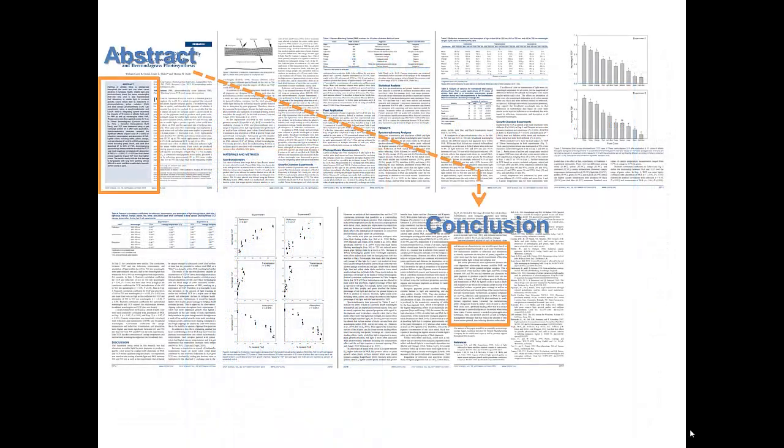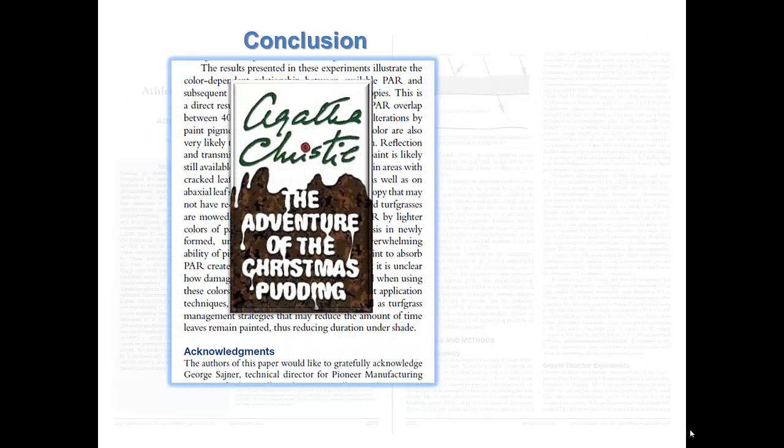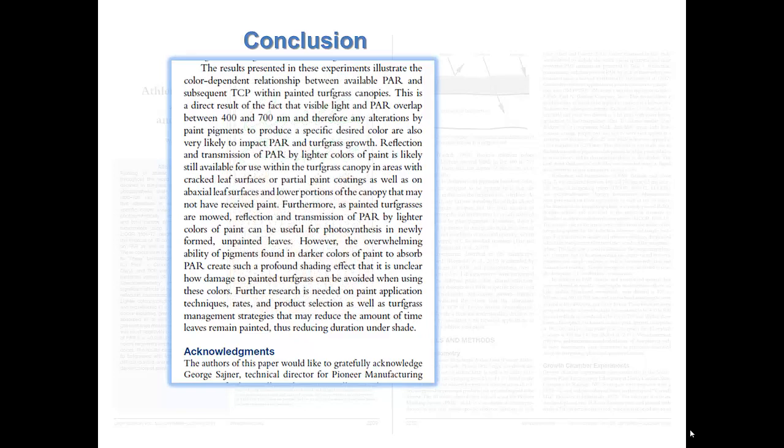Since this article is relevant to our topic, we will now jump to the conclusion. This is the last part of the discussion. Remember, this is not an Agatha Christie mystery novel. Jumping to the end of the text will not spoil the story. The last paragraph of the discussion sums up the article. It provides a summary of what was concluded and often indicates what else needs to be investigated. In this example, any alteration by plant pigments to produce a color impacted turfgrass growth. Darker colors had such a shading effect, it was unclear how damage could be avoided.